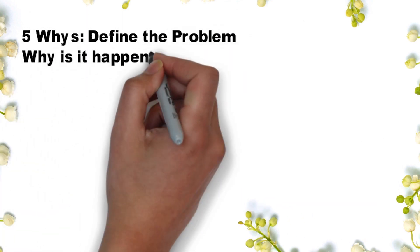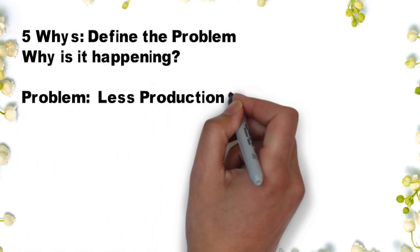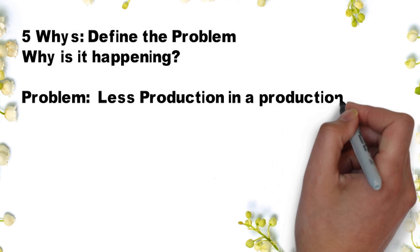Five Whys: Define the problem, why is it happening. Problem: Less production in a production system.